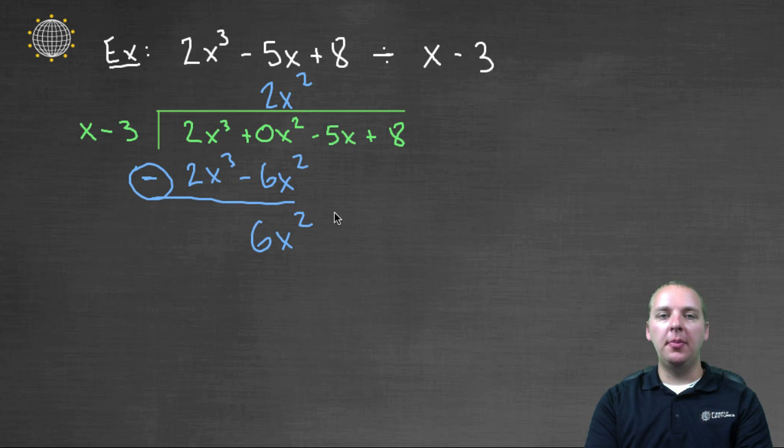Anyways, next we'll drop down the minus five x, like so, and then we'll play the game again. We'll say what, again times just the x, just keep your eye on the leading term, would give you six x squared. The answer is six x. So we'll put plus six x. Six x times x would give you six x squared. Six x times negative three would make minus eighteen x. We'll draw our line, we'll subtract, six x squared minus six x squared cancels.